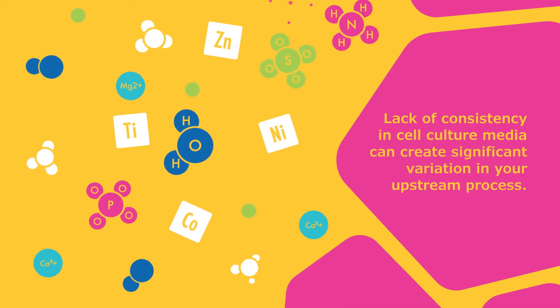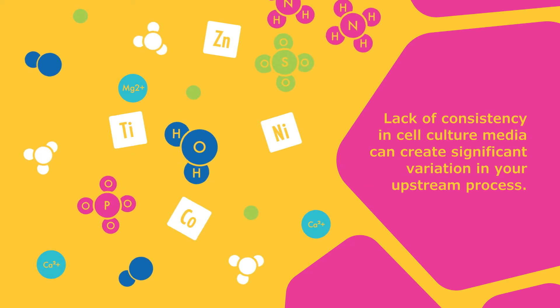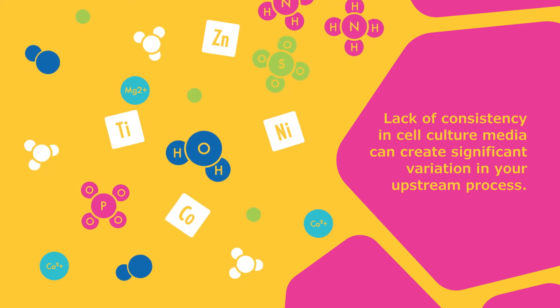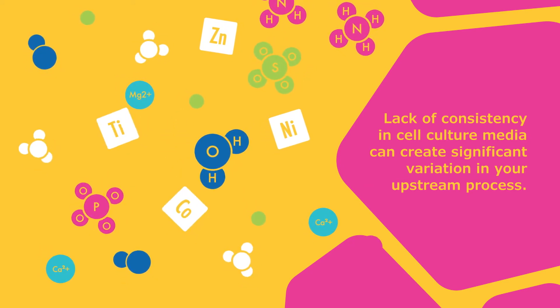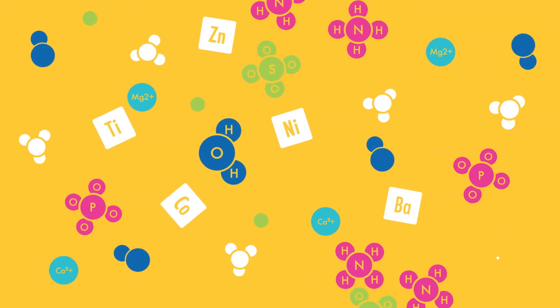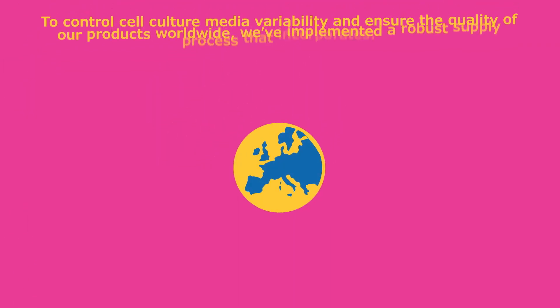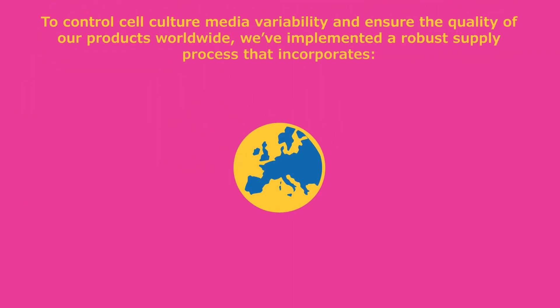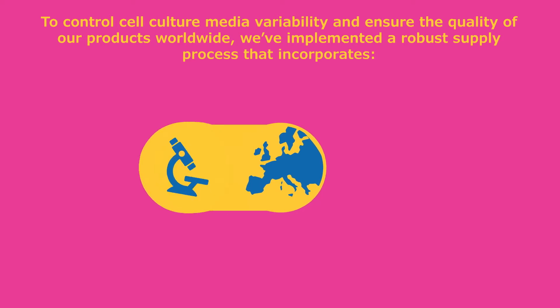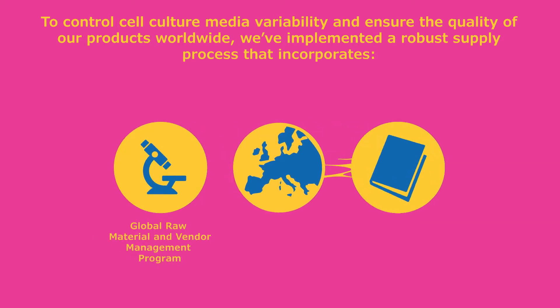Lack of consistency in cell culture media can create significant variation in your upstream process. To control cell culture media variability and ensure the quality of our products worldwide, we've implemented a robust supply process that incorporates a global raw material and vendor management program, a consistent manufacturing network, and global quality systems.